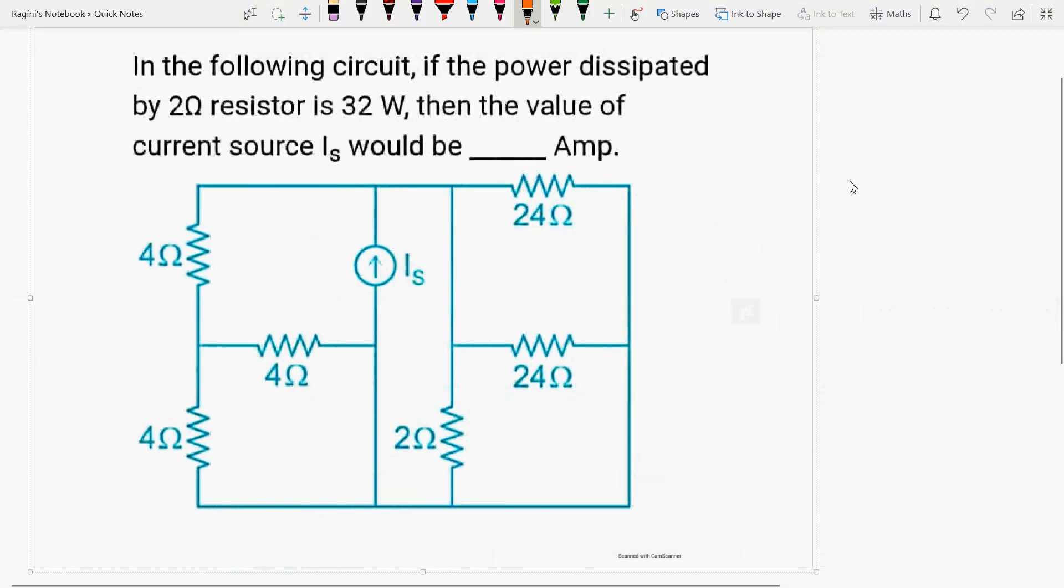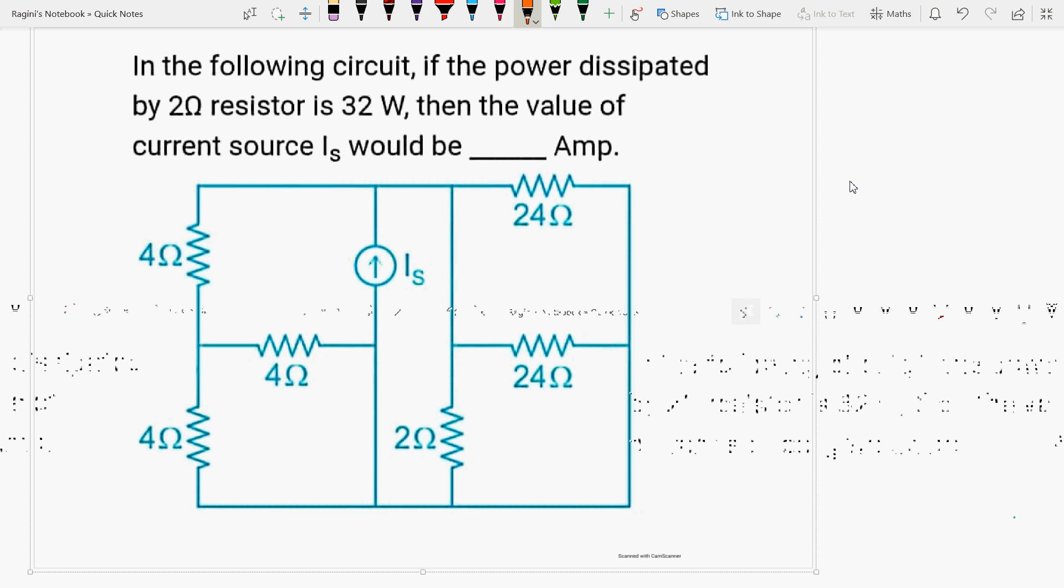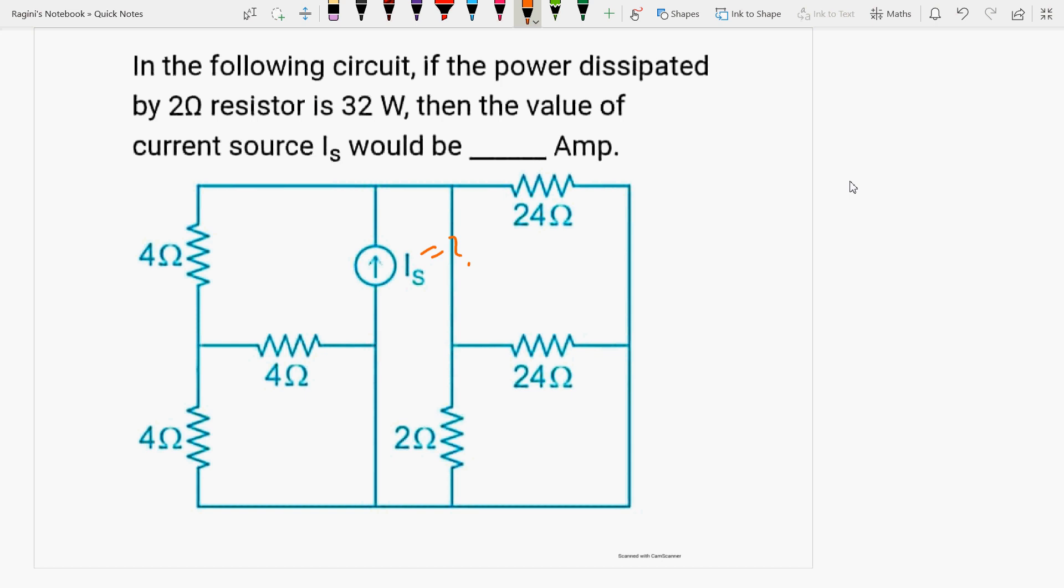In the following circuit, if the power dissipated by the 2-ohm resistor is 32 watts, then the value of the current source Is will be? This will be out of this. In this case, the circuit is simplified as follows.